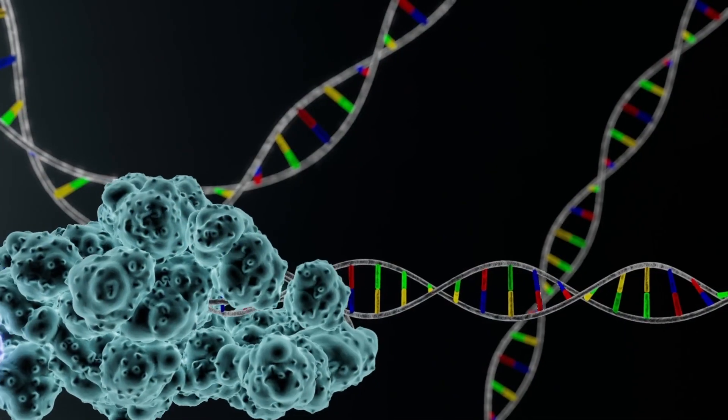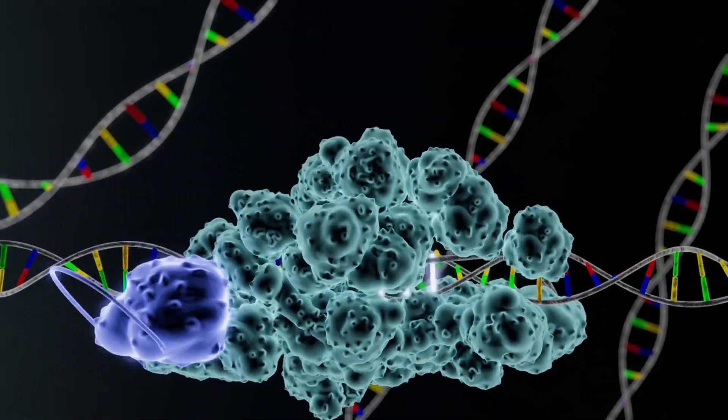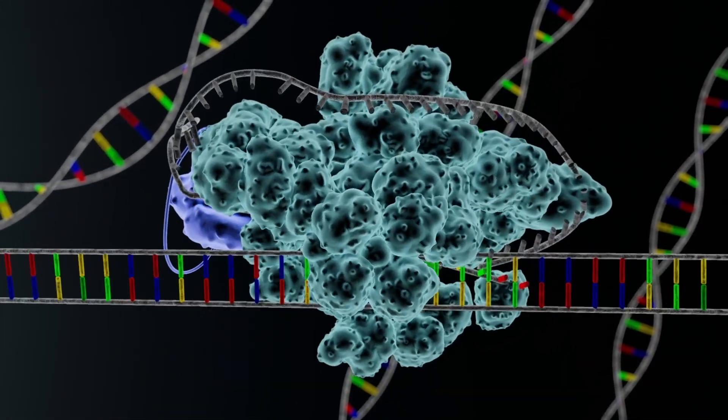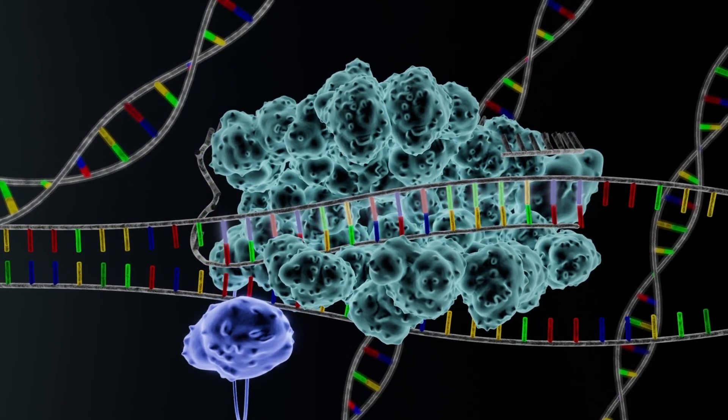First, the RNA-Cas9 combination searches for a docking sequence. Next, it unwinds the adjacent DNA and searches for a perfect match between the guide RNA sequence and the target DNA sequence.